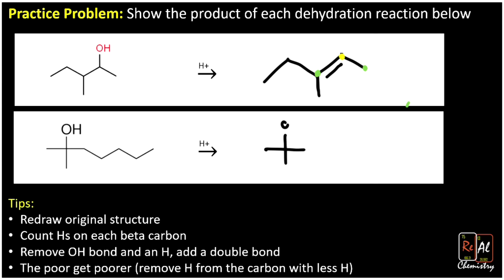The last example is a tertiary alcohol with a cross shape. The alpha carbon stays on the OH, but now we have three beta carbons connected to it. Counting hydrogens: three on one end, three on the bottom, and two on the right-hand side. The side with two hydrogens is the poorest, so we remove a hydrogen from there, remove the OH, and add a double bond on the interior — a common pattern. This is dehydration: turning an alcohol into an alkene by removing OH and H, always following Zaitsev's rule.